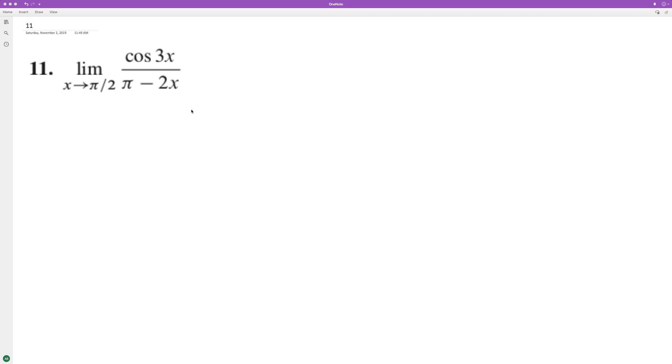The limit of the following as x approaches pi over two. So for cosine of three times pi over two, and then we have pi minus two times pi over two.